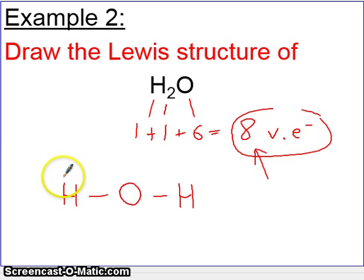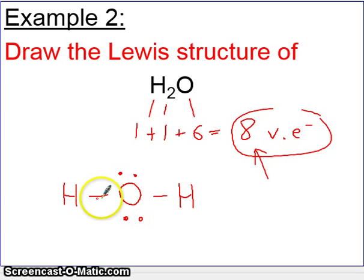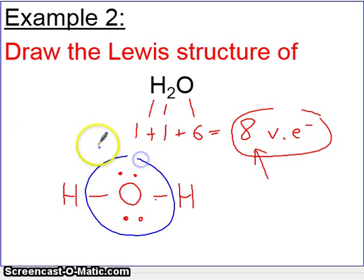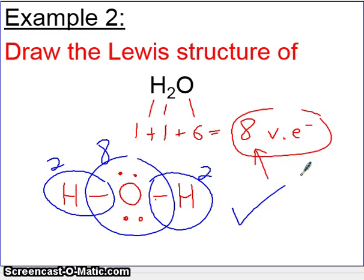Put the two hydrogens around oxygen, usually on the left and on the right. Connect them all with a line representing two electrons each. So far we've placed four electrons. We can't add any more around hydrogen, because hydrogen can only have two. The rest of the electrons go around oxygen — we've distributed four, there are four left, so we put two on top and two on the bottom. That gives oxygen eight valence electrons. Oxygen obeys the octet rule, and hydrogen obeys its rule by having two electrons.